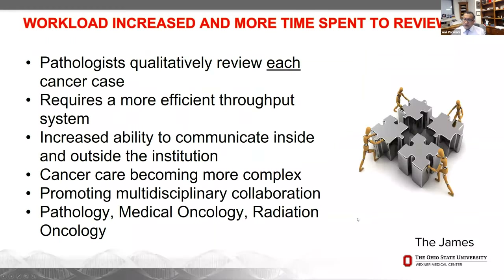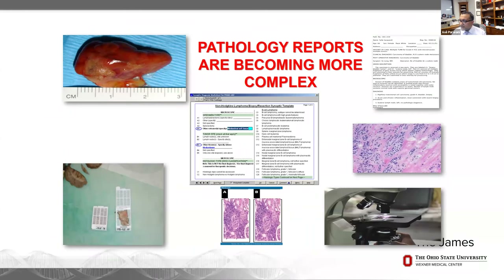Let's look at workload issues. Pathologists have to qualitatively review each cancer case, write synoptic reports, look at molecular diagnostic assays, and integrate all this information into reports. This requires a highly efficient throughput system and increased ability to communicate inside and outside the institute. Cancer care is becoming more complex — we have new biomarkers, and there is a desire to promote multidisciplinary collaboration. As a result, pathology reports are becoming more complex.